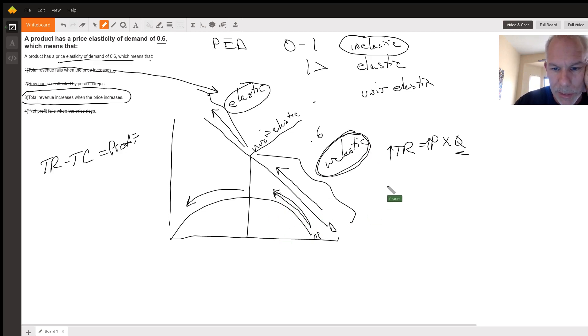This would make sense if we drew our own inelastic demand curve and we were to show the price changing. We could see that the price change here is a much greater proportion than the quantity demand change. So if our price went up by 5%, our quantity demand would change by less than 5%. That implies that we haven't lost as many customers and then our total revenue must have gone up.